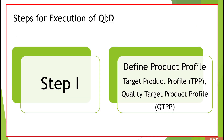Now, coming to QBD, the very first step that we saw in our last video was to define the product profile, which constitutes of two elements — that is, TPP and QTPP. TPP means target product profile and QTPP means quality target product profile. So the very first step of QBD is to define the product profile.